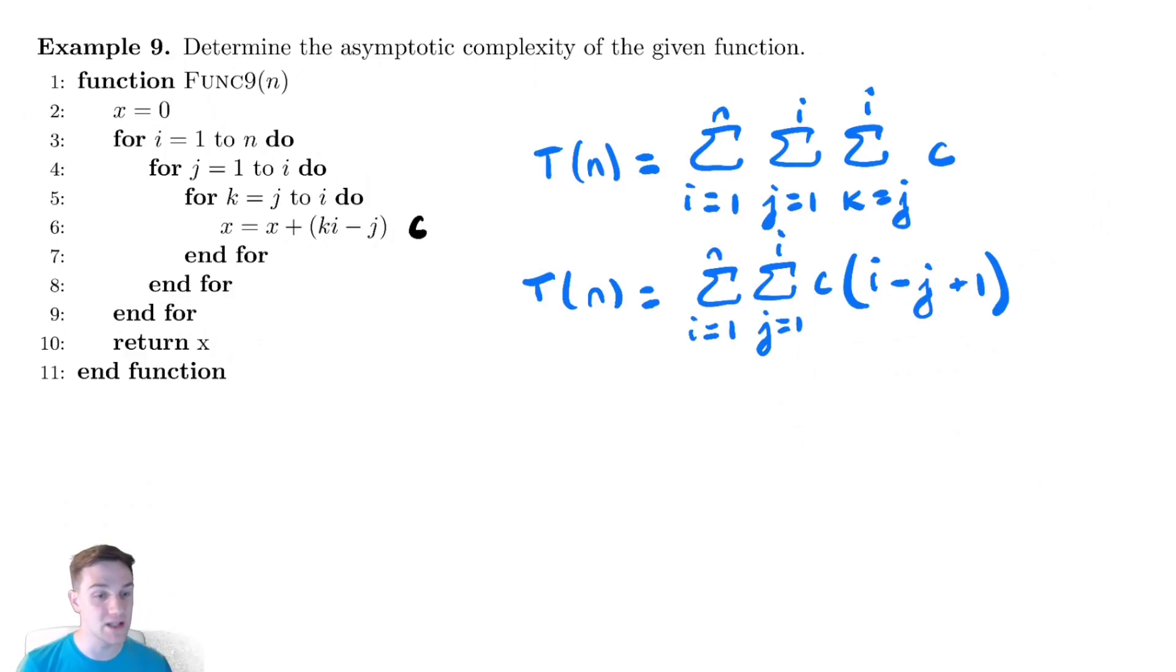Now there are several ways we could try to proceed. You could try to break up the summation and do things like that. I'm going to encourage us to just start bounding this and see what happens. So let's try and bound this above. We're going to upper bound. To upper bound this, we need to choose the value of j that makes the innermost summation as large as possible. This inner summation is decreasing with j.